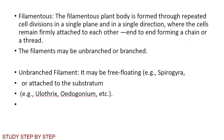Now, the filamentous type: a filamentous plant body or filamentous thallus is formed through repeated cell division in a single plane and in a single direction. The cells remain attached to each other end to end, forming a chain or thread. The filamentous type may be branched or unbranched.